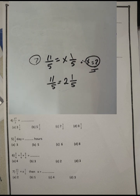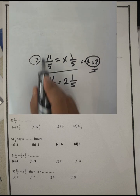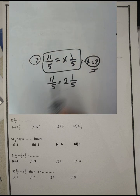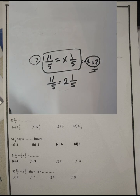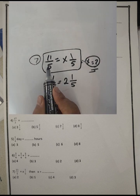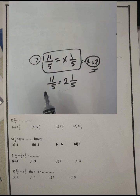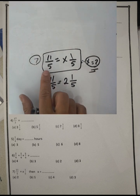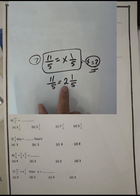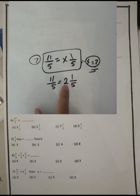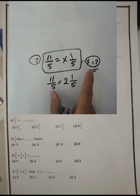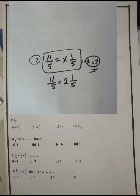Again, this example asks you to find the value of x, which means converting from improper fraction to mixed number. Eleven divided by five equals two and remainder one, because two times five equals ten with remainder one. Therefore the value of x is two.